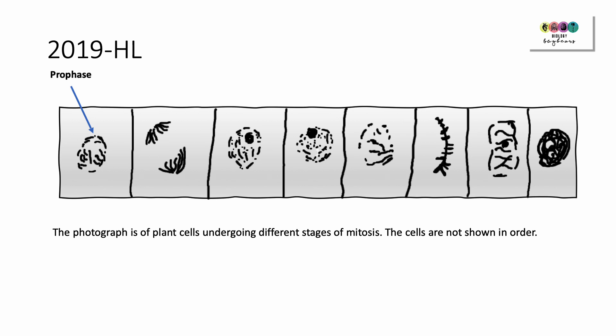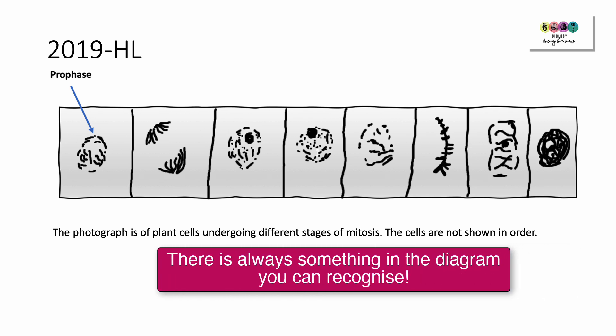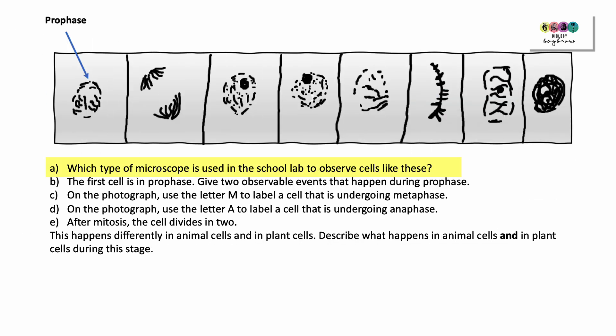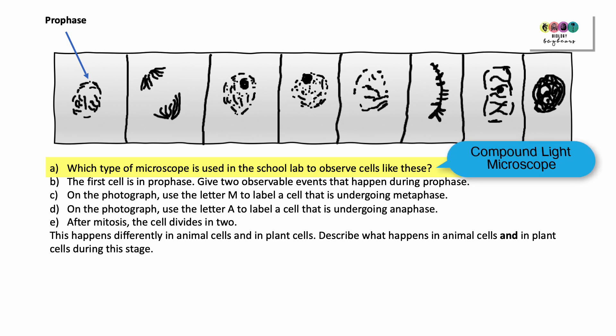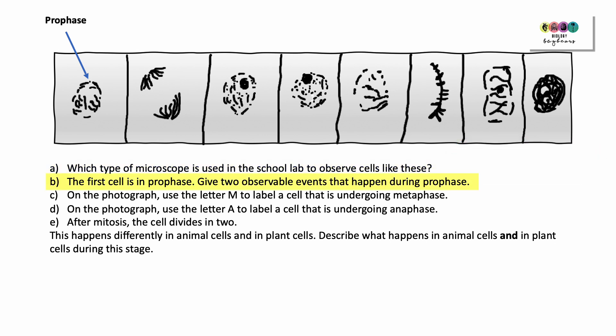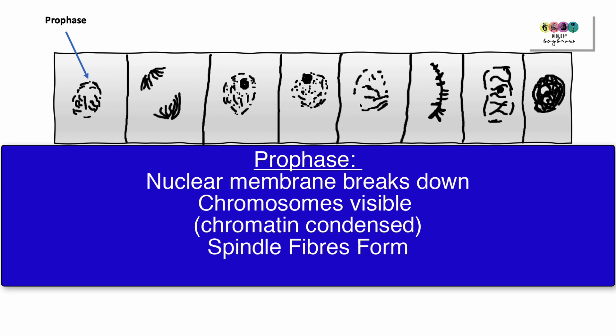This is 2019 higher level, and in this year there was a photograph on the paper. It looked very unclear — I've tried to reproduce it here. But if you do get something like this, always pick out what you can. Look for metaphase or anaphase; they're generally easy to pick out. Which type of microscope is used in the school lab to observe these cells? It's the light microscope — to be exactly correct, we would say the compound light microscope. The first cell is in prophase. Give two observable events that happen during prophase: the nuclear membrane breaks down, chromosomes are now visible because chromatin has condensed, and spindle fibres form.